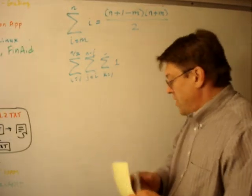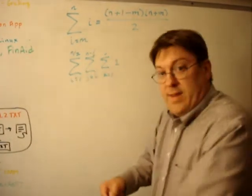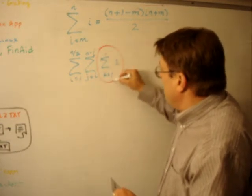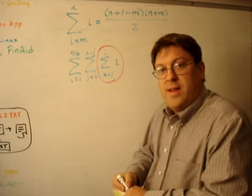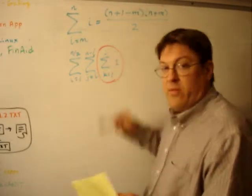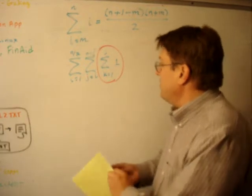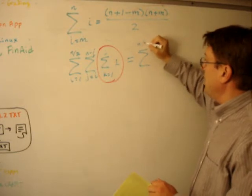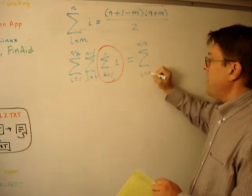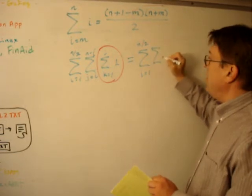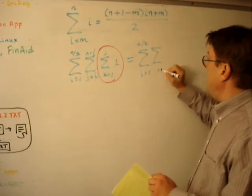Now, of course, this one's easy because the sum from 1 to anything of 1 is just whatever anything is. So we can reduce this sum to be the sum from i equals 1 to n over 2 of the sum of j to i.